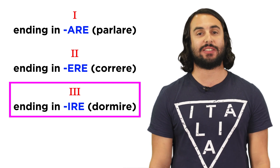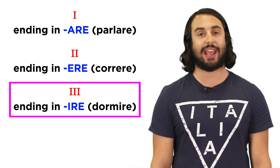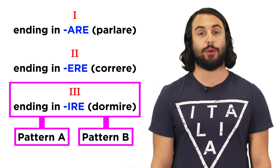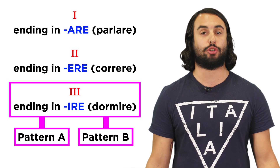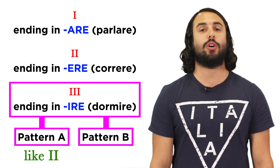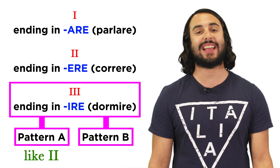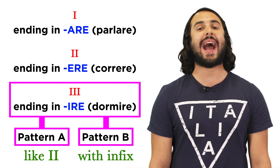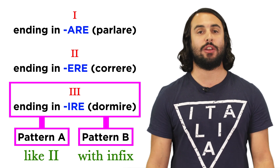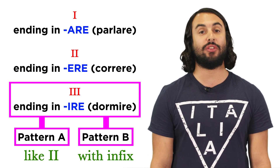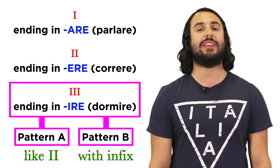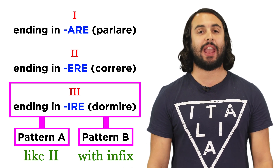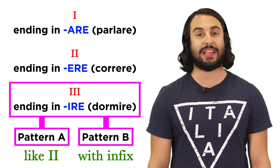When we talk about these verbs, we can't generalize like we did with the other conjugations. Instead, the third conjugation verbs are divided into two large groups. The first group will conjugate similarly to the second conjugation, but the other group will add a special infix, or a group of letters, within the word. Let's call these groups pattern A and pattern B, and try one example from each.